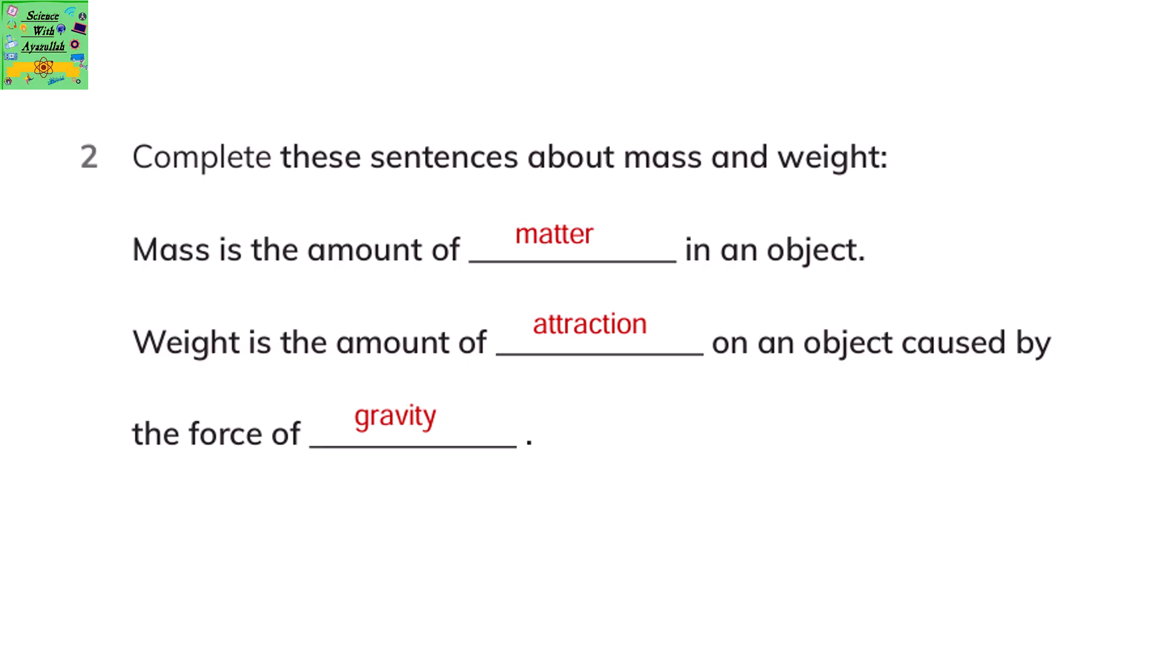Complete the sentences about mass and weight. Mass is the amount of matter in an object. Weight is the amount of attraction on an object caused by the force of gravity.